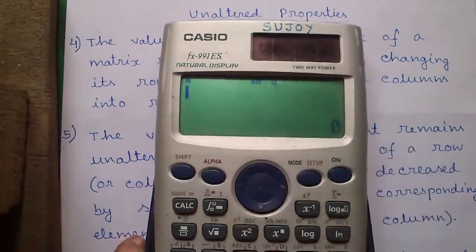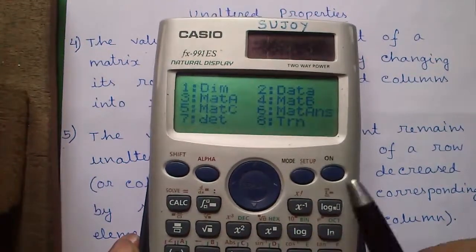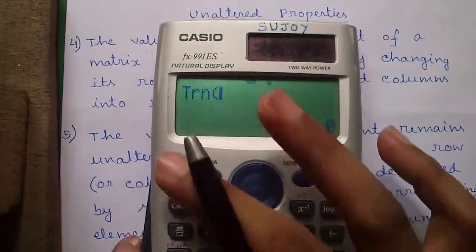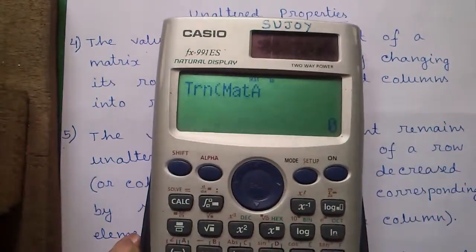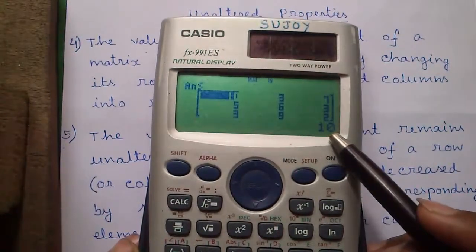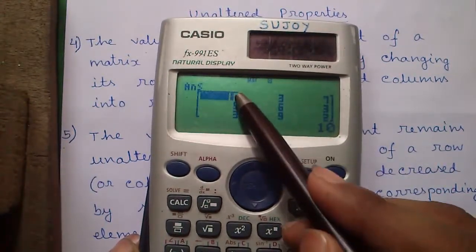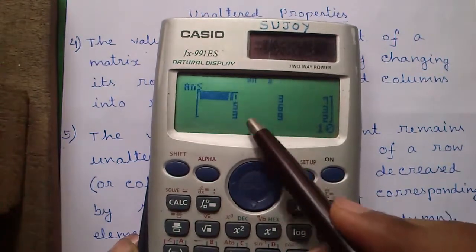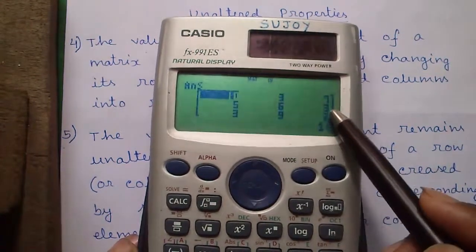So let's transpose it. Option 8 for transpose. So transpose of matrix A is this matrix where rows are written as columns: 10, 5, 3, 3, 6, 9 and 7, 3, 2.